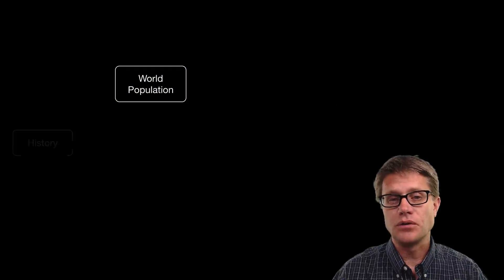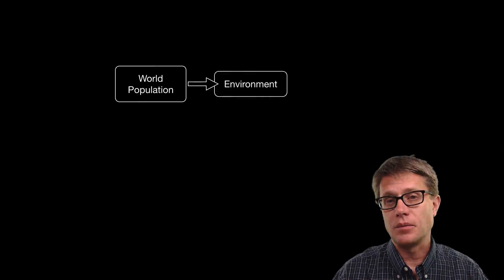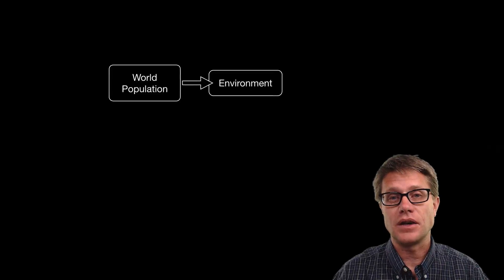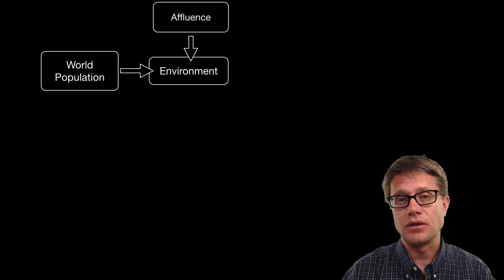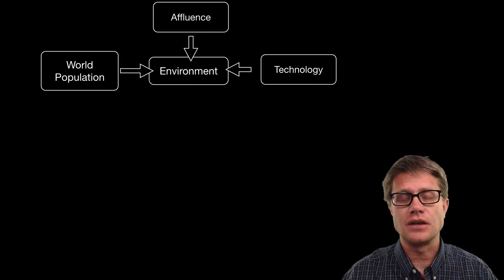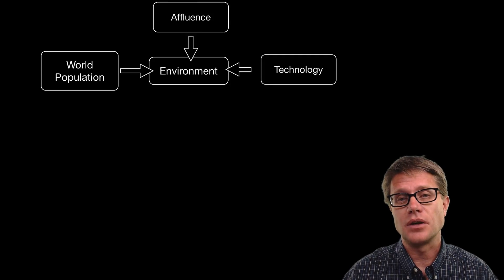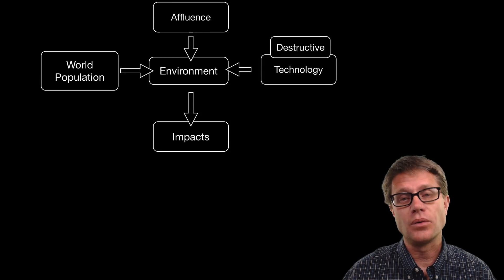We have learned so far that with industrialization you see exponential growth in a population, and so the population increases and that is impacting the environment. But it is not only the number of people — it is the affluence of those people, how much they are consuming. And it is also their technology. Now some technology can actually help the environment, so I am talking about destructive technology that is impacting the environment.